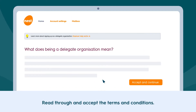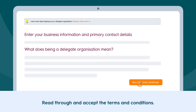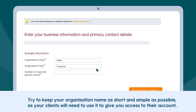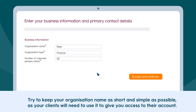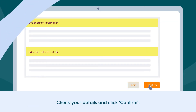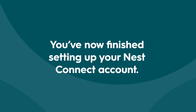You can then log into your account with the username and password that you created earlier. Read through and accept the terms and conditions. Then enter your business information — try to keep your organisation name as short and simple as possible, as your clients will need to use it to give you access to their account. Check your details and click Confirm. You've now finished setting up your Nest Connect account.